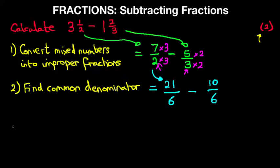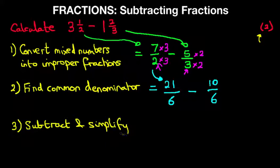And I'm sure you know what the next step is. The final step, we simply now subtract and simplify where necessary. So now we can put all of this over 6. 21 minus 10 is 11. So the answer is 11 sixths. However, we can now simplify it. That simply becomes 1 and 5 sixths. And that is our answer.